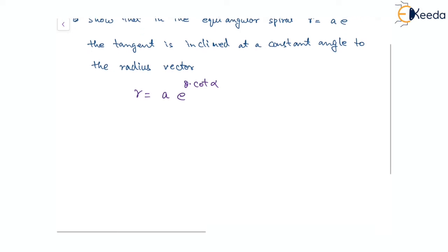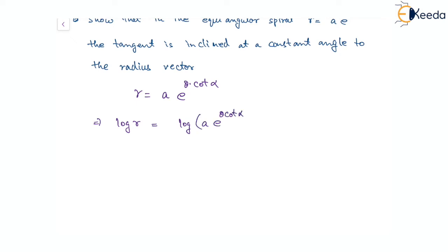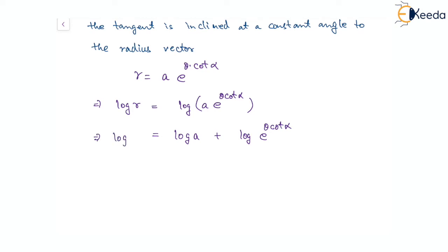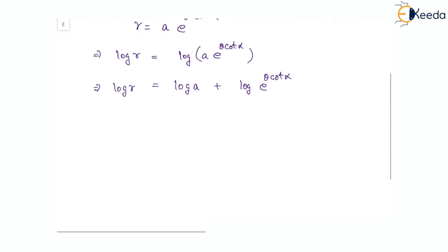Now let's take log on both sides, so we'll have log of r equal to log of a·e^(θ cot α). This can be further written as log of a plus log of e^(θ cot α). Since log and exponential are inverse of each other, this simplifies to log r equals log a plus θ·cot α.